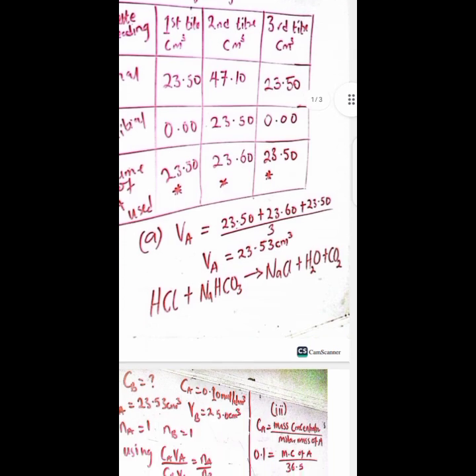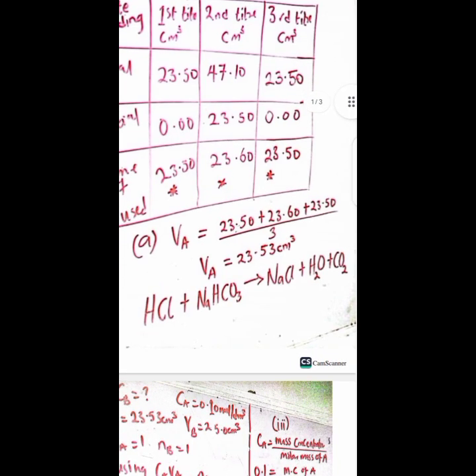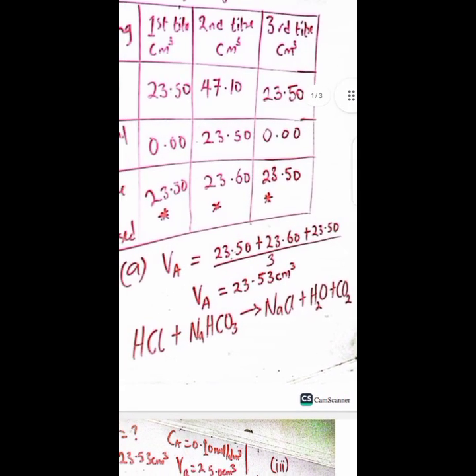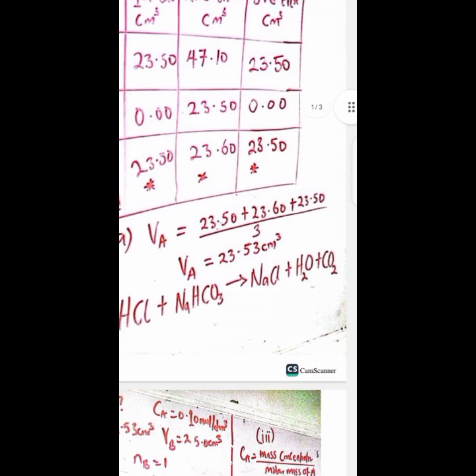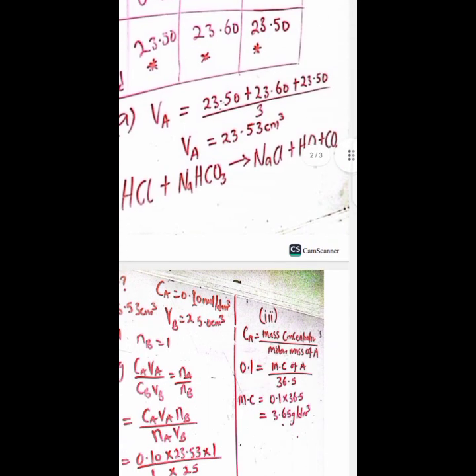So the question also asked us to calculate the average volume of A used and that is done by adding these three asterisk values and then divided by three. And then we have the equation of the reaction here, which you have seen from the original question.